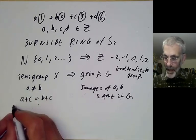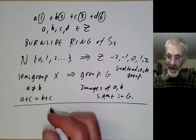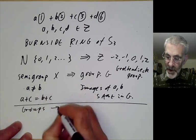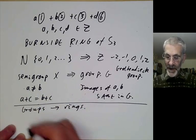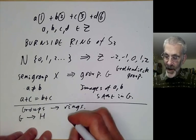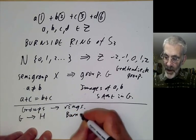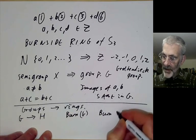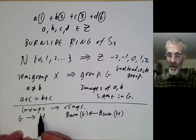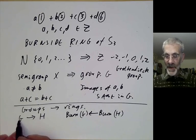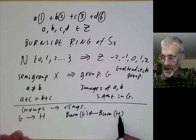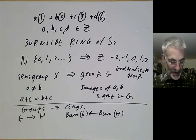We've got this map which takes groups to rings - it's actually a functor. Suppose we've got groups G and H and a map from G to H. Then we can look at the Burnside rings and there's a morphism between them. We've got to be careful because it goes in the wrong direction. If H acts on a set, by composition G also acts on a set, so we get a map from the Burnside ring of H to the Burnside ring of G. It's a contravariant functor.